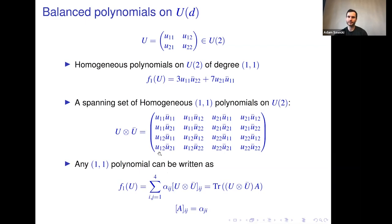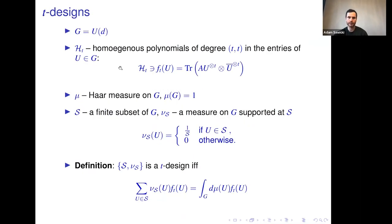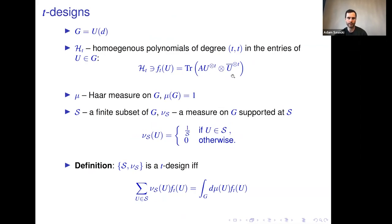We can generalize to polynomials of degree (t,t) where t is some integer. We take the unitary group U(d) in d dimensions, and by H_t we denote homogeneous polynomials of order (t,t). By the same reasoning, any such polynomial can be written as Tr(A · (u^{⊗t} ⊗ u-bar^{⊗t})), where A acts on a Hilbert space of dimension d^{2t}. Now I want to introduce the concept of a t-design.